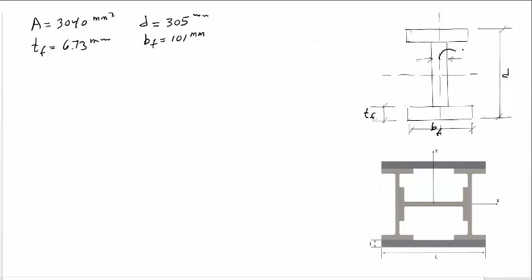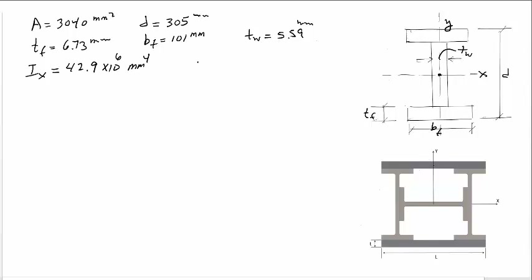The thickness of the web TW is listed as 5.59 mm. The moment of inertia with respect to the X axis from the table is 42.9 × 10⁶ mm⁴, and the moment of inertia with respect to the Y axis is 1.17 × 10⁶ mm⁴.